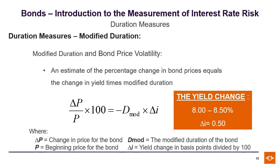We're now going to use the duration measures we've calculated to estimate the percentage change in bond prices for a change in yield. Looking at the formula, the question that will leap up at you is why we're putting a minus sign in front of D-mod. Remember that price and yield are inversely related: as interest rates go up, prices go down; as interest rates go down, prices go up. You have to allow for that, and that is why the minus sign is there.